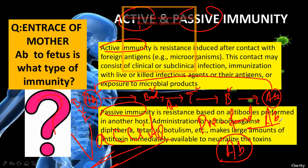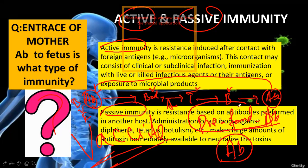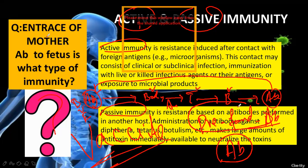Think of it this way — to make a soldier, you go through training, pass all levels, and then become a trained soldier. But if you directly hire a soldier from another country and put them straight into your army — that is the passive way. Pre-formed antibody enters your blood — I inject antibody against virus, bacteria, or fungus — this immunity is passive immunity.